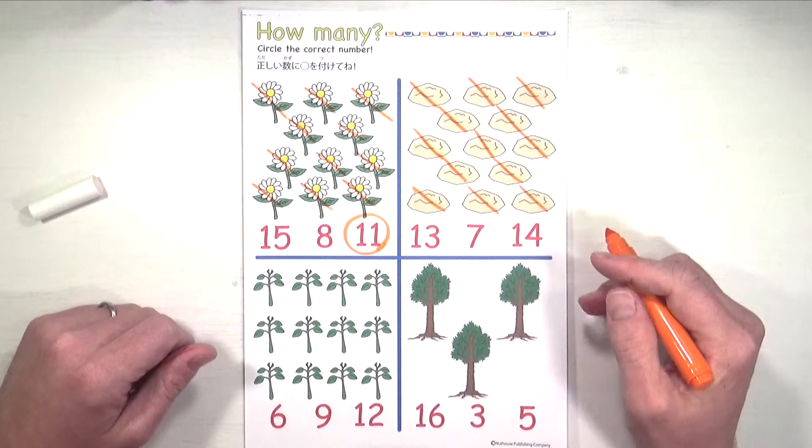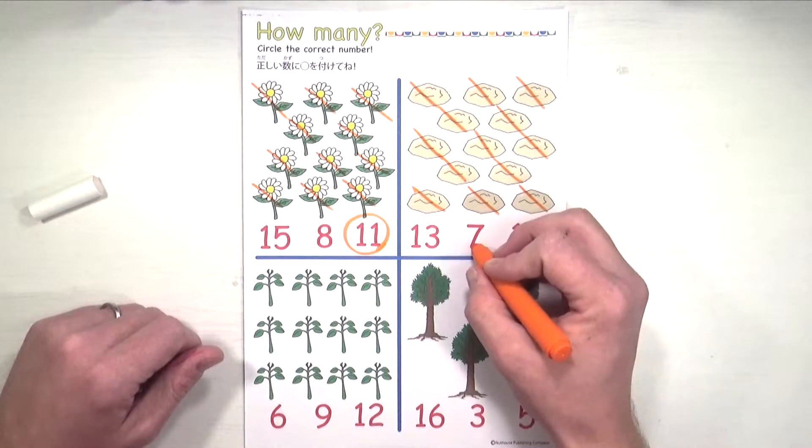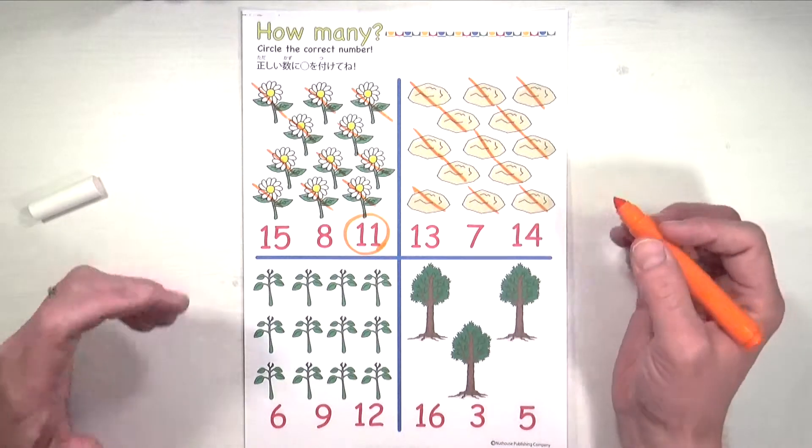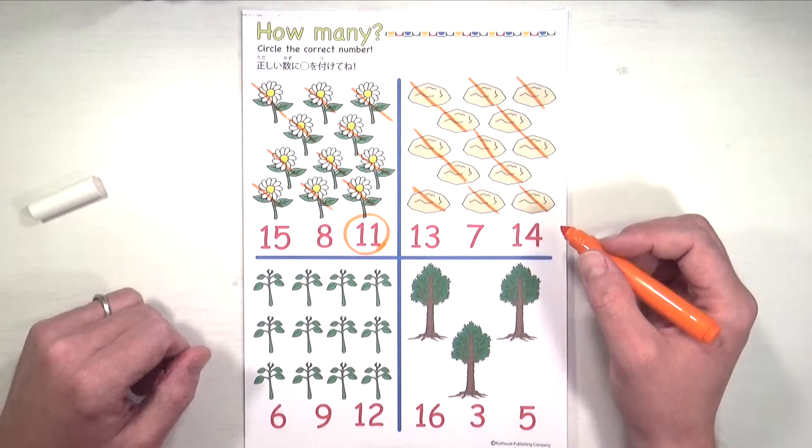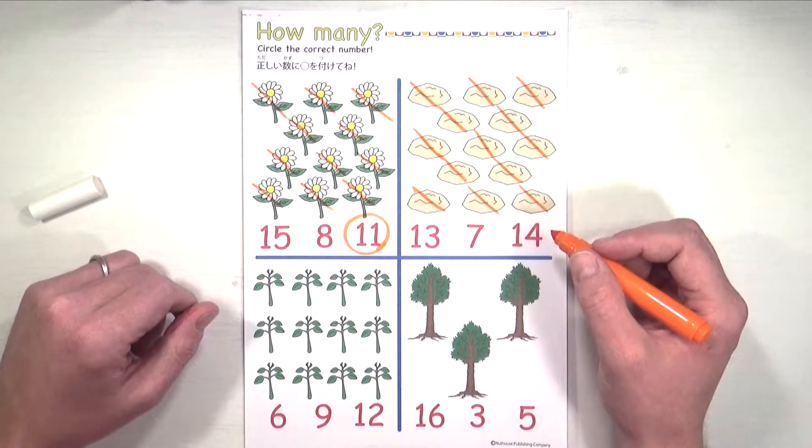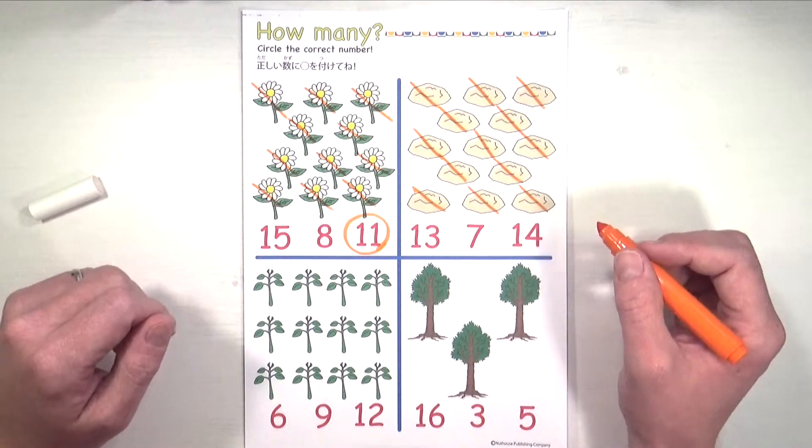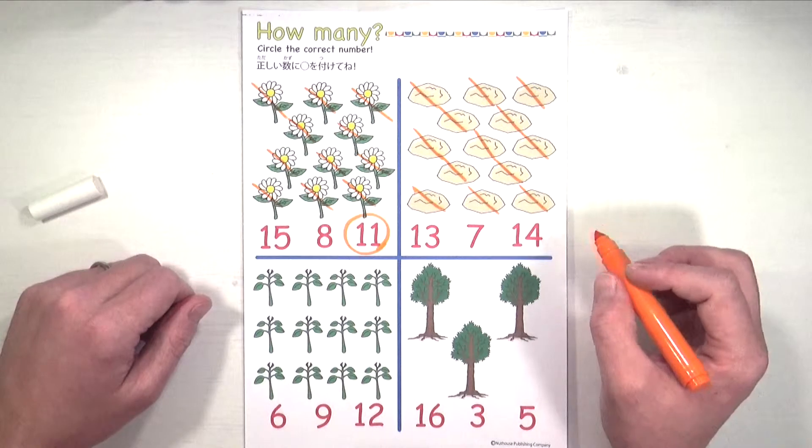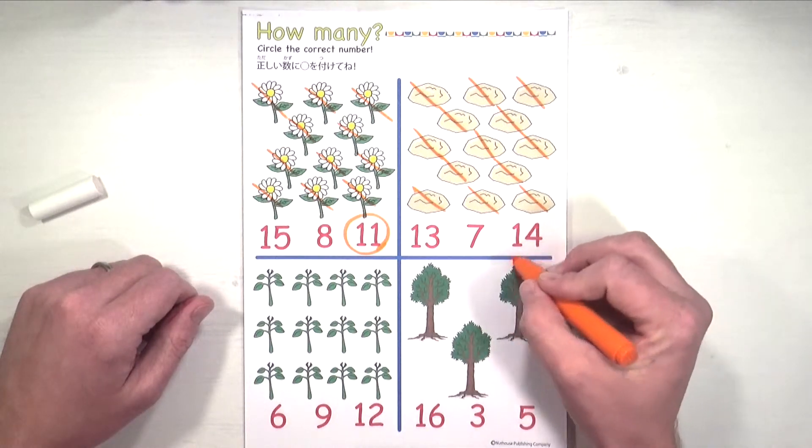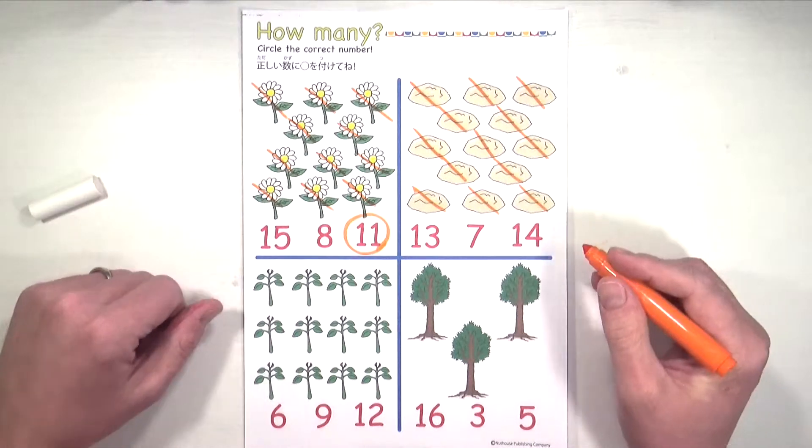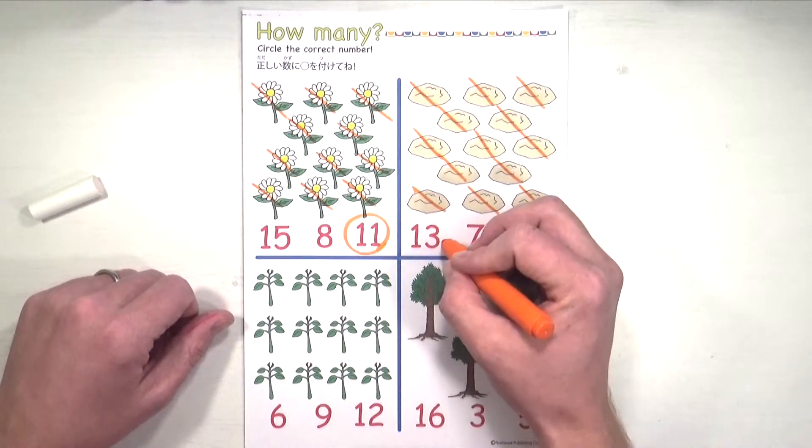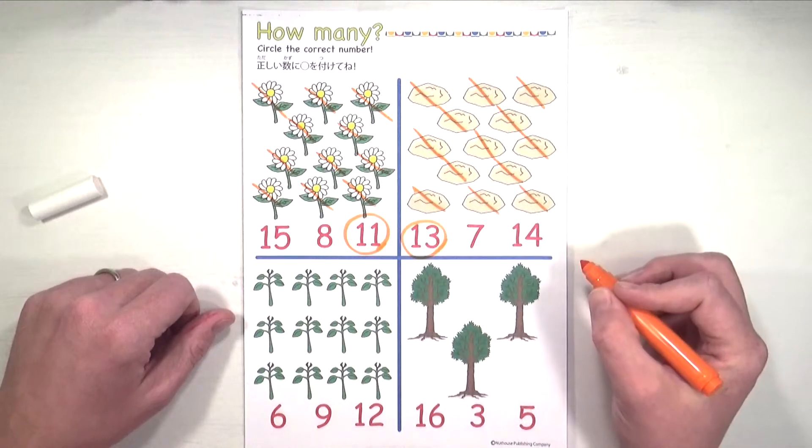Well, which one is thirteen? Is it this one? No, that's seven. We know that seven. So which one is thirteen? Well, I'll give you a hint. Thirteen is a one and a three. Which one is a one and a three? Is it this one? No, that's a one and a four. That one's fourteen. Which one's a one and a three? Yes, that one is thirteen. So we're going to circle thirteen. Nice.